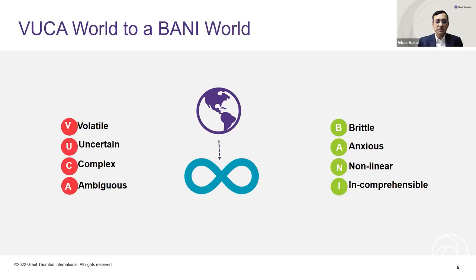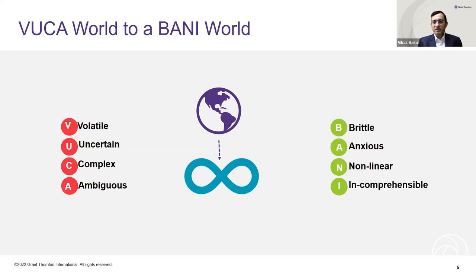Thanks to Jamais Cascio, an American anthropologist, author, and futurist, who coined the term BANI — Brittle, Anxious, Nonlinear, and Incomprehensible — in view of the various crises the world is collectively facing today. These include primarily climate change, pandemic, inequality, and instability, just to name a few.